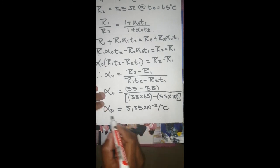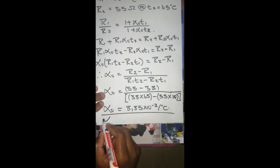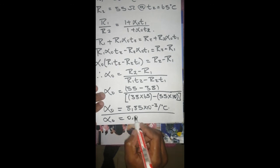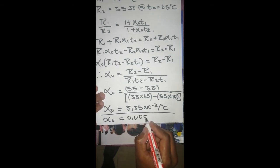Per degree Celsius, and that's our answer. This is the same as 0.00885 per degree Celsius.